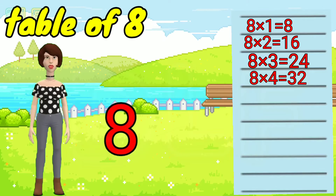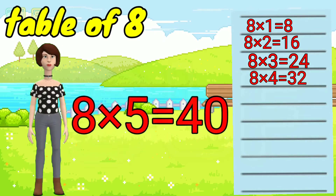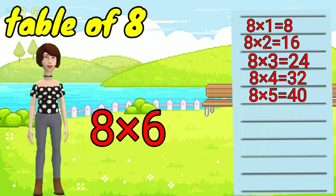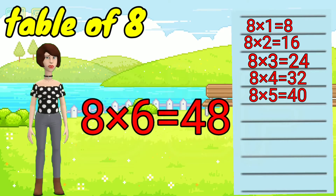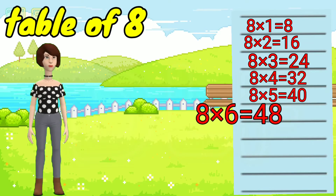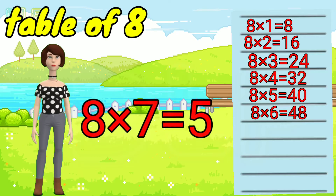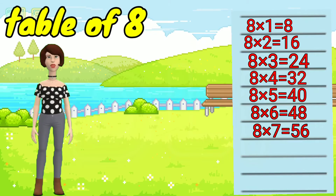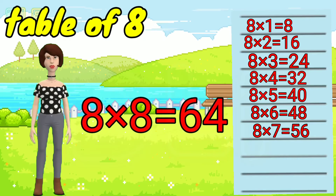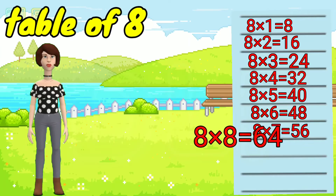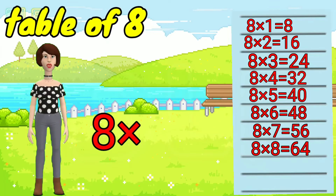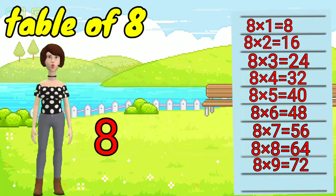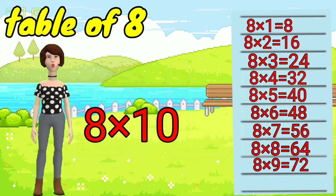Eight four ja thirty-two. Eight five ja forty. Eight six ja forty-eight. Eight seven ja fifty-six. Eight eight ja sixty-four. Eight nine ja seventy-two. Eight ten ja eighty.